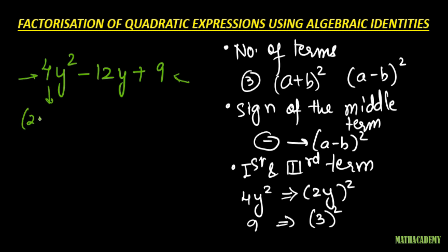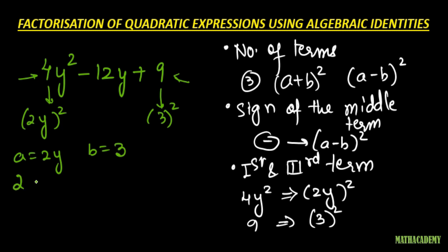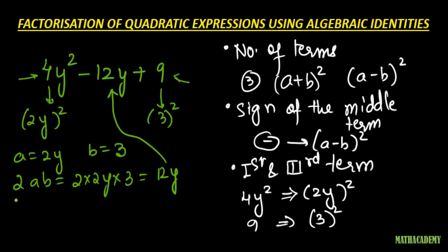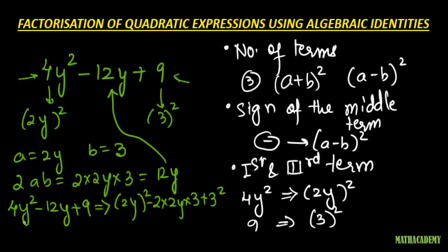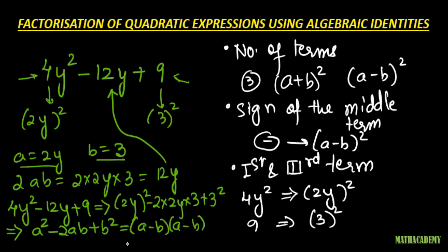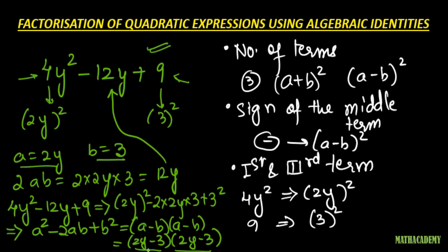Let us see if we can apply the identity (a - b)² to this algebraic expression. We write 4y² as (2y)² and 9 as 3². We take a as 2y and b as 3. The 2ab term will be 2 × 2y × 3 = 12y, which is the same as the middle term. So we can write 4y² - 12y + 9 as (2y)² - 2·(2y)·3 + 3², which is a² - 2ab + b², and that is (a - b)(a - b). Replacing a by 2y and b by 3, we get (2y - 3)(2y - 3). We are able to factorize this expression as the product of two equal factors — (2y - 3)(2y - 3) — both in their simplest form.